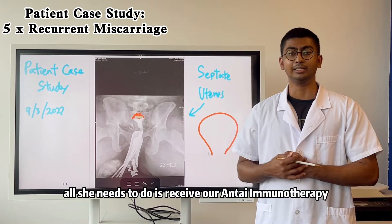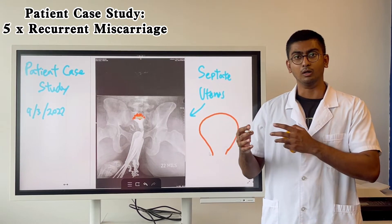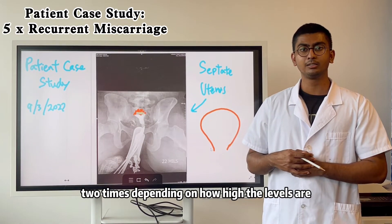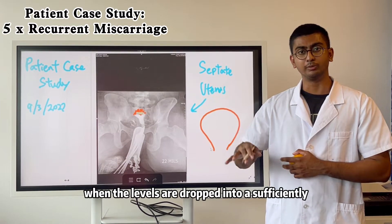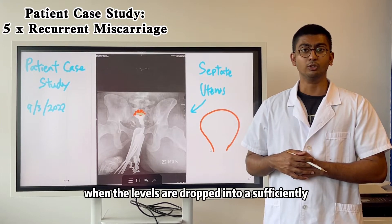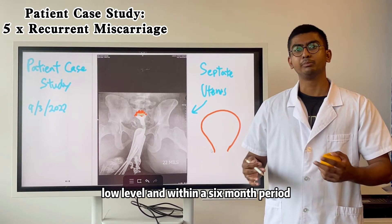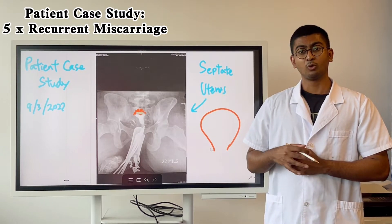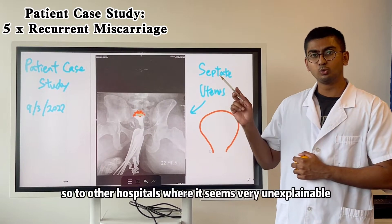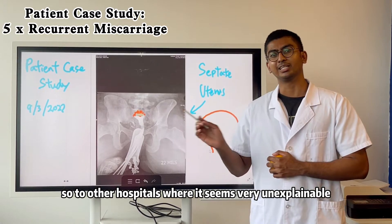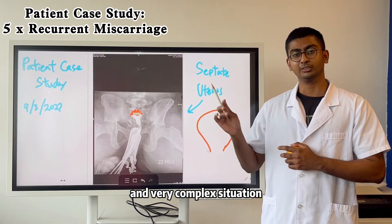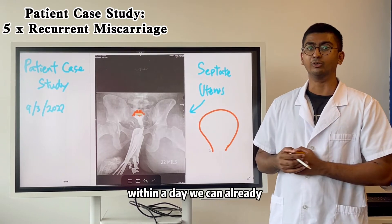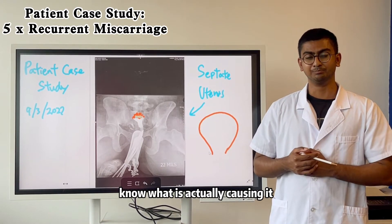Next, for the immunity factor, all she needs to do is receive our anti-immunotherapy injections — maybe 1 to 2 times depending on how high the levels are. When the levels have dropped to a sufficiently low level within a 6-month period, all she needs to do is conceive and she can have a full-term healthy pregnancy — almost guaranteed. What seems very unexplainable and complex to other hospitals, here at Antihospital we can already know what is actually causing it within a day.